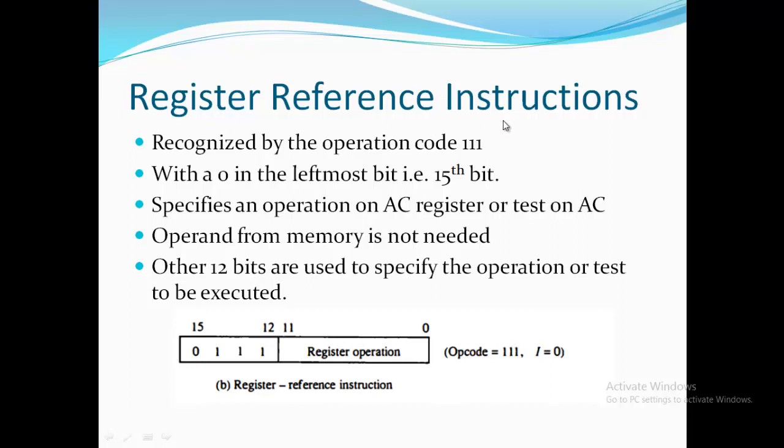The second one is register reference instructions. The register reference instructions are recognized by the operation code 111 with a 0 in the leftmost bit, that is the 15th bit of the instruction. A register reference instruction specifies an operation on accumulator register or a test of the accumulator register. An operand from memory is not needed in this, so the other 12 bits are used to specify the operation or test to be executed.